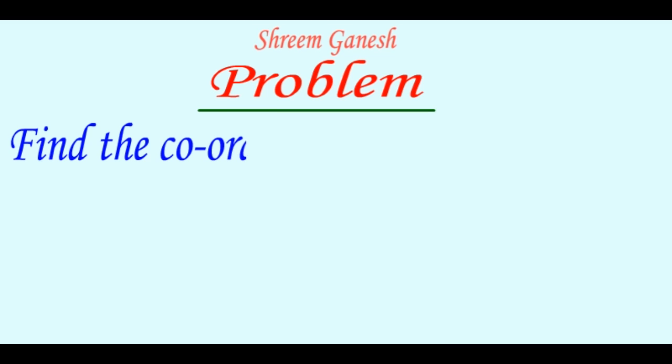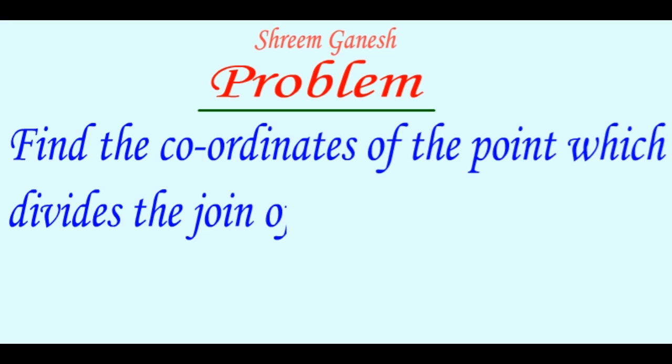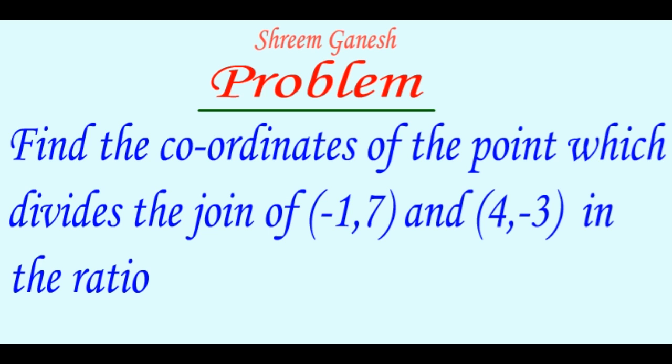Find the coordinates of the point which divides the join of points with coordinates (-1, 7) and (4, -3) in the ratio 2:3.